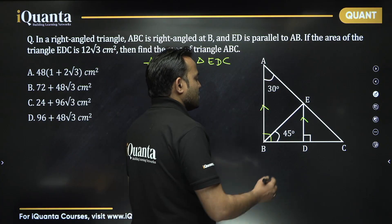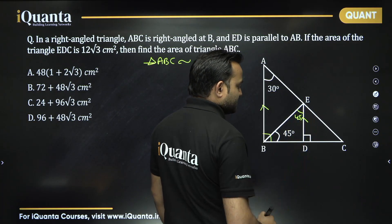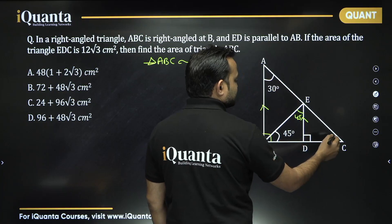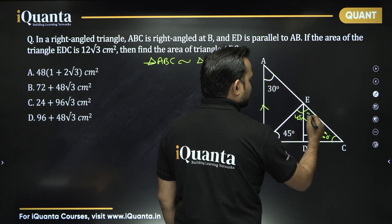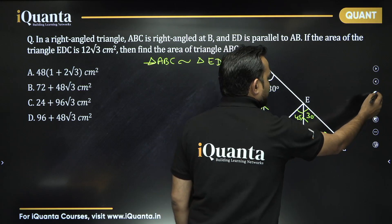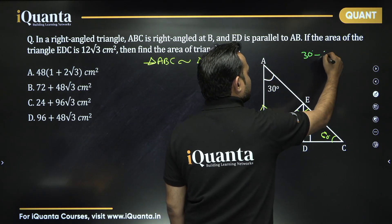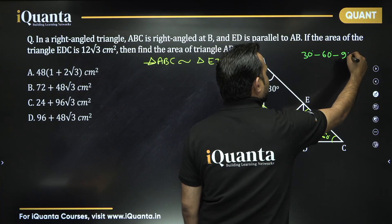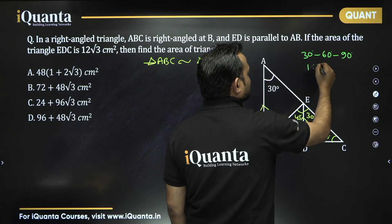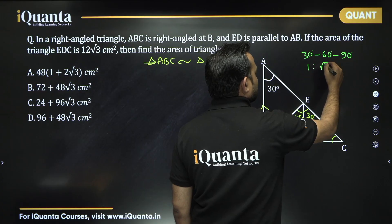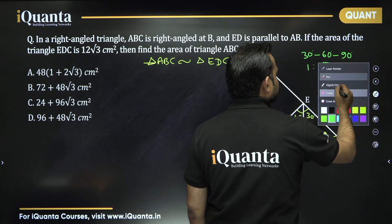If this angle is 45 degrees this will also be 45 degrees, and if angle C is 30 degrees this will be 60 degrees. In any 30-60-90 triangle, the ratio of sides opposite to 30 degrees is 1, opposite to 60 degrees is root 3, and opposite to 90 degrees is 2.